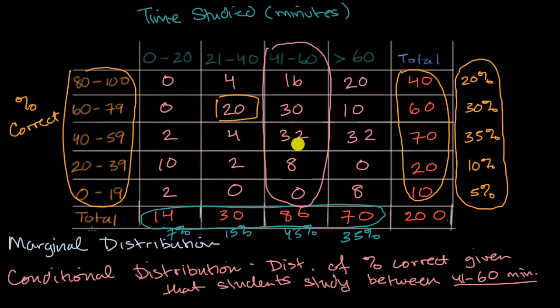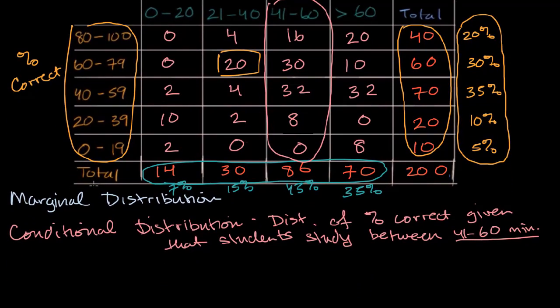Now an important thing to realize is a marginal distribution can be represented as counts for the various buckets or percentages, while the standard practice for conditional distribution is to think in terms of percentages. So the conditional distribution of the percent correct, given that students study between 41 and 60 minutes, it would look something like this.